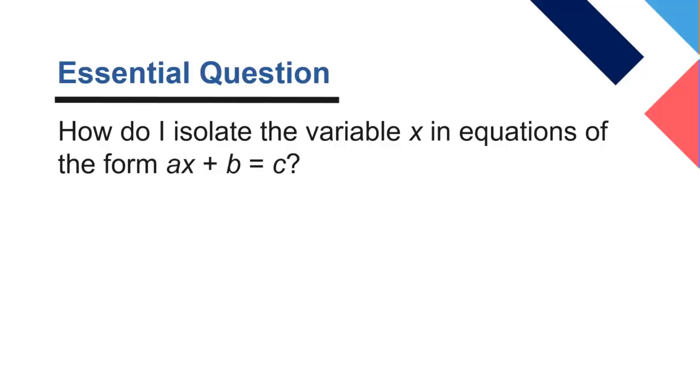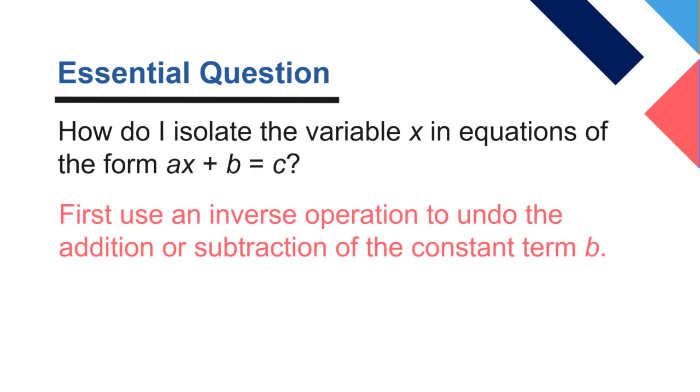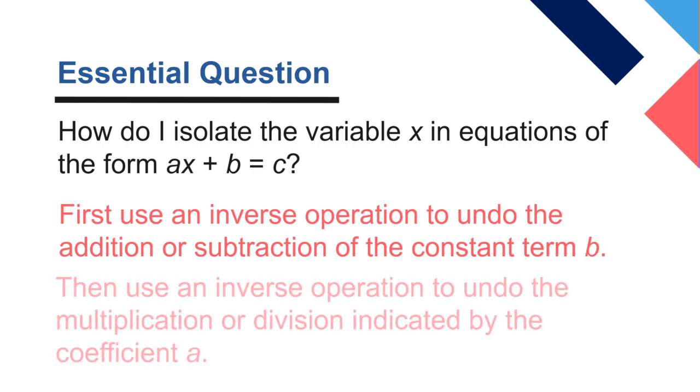Our essential question. How do I isolate the variable x in equations like that? We use the inverse operation to undo addition and subtraction of the b. Then, we use the inverse operation to undo the multiplication division by the a. There are exceptions to that when you have the fraction line. Okay. In that case, we have to undo that division before we can deal with what's, you know, division by multiplication, before we can deal what's in that numerator and work with that. But, usually, generally, those are the steps. Work on your assignment.